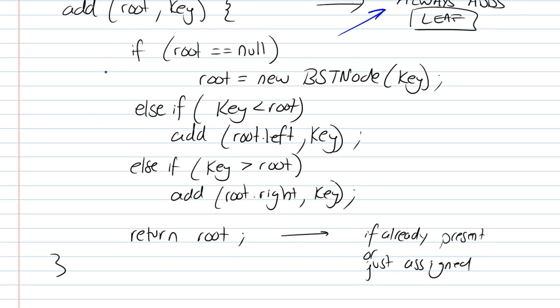What you're going to be doing is going through your tree, and once you reach a null position, then you could replace that null by the key that you have.